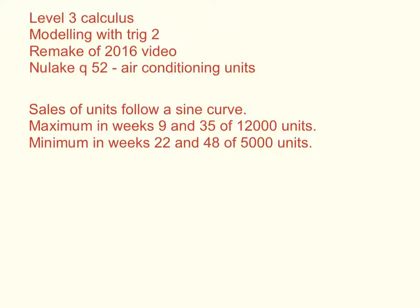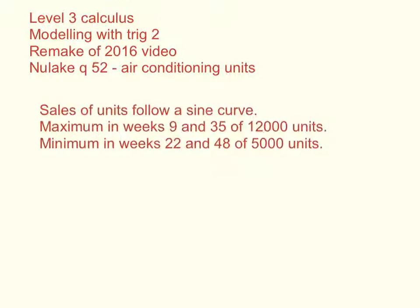So I'm just going to follow this one exactly as it is and hopefully they won't mind too much. So we've got this situation: we're told that sales of air conditioning units follow a sine curve and we're given a maximum and minimum value for the number of units sold. Now I'm redoing this because last year I made a little mistake near the end of the video which involved whether I was working with 12 or 12,000.